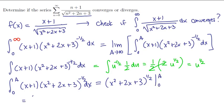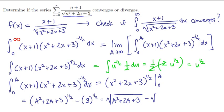If we plug in a, we get (a² + 2a + 3)^(1/2). Then we subtract when we plug in 0, which is just 3^(1/2). If we clean this up, that's √(a² + 2a + 3) - √3. There's our approximate area, the approximate integral.